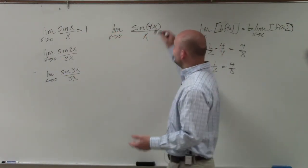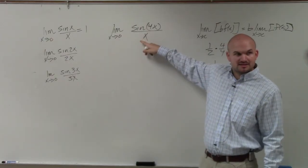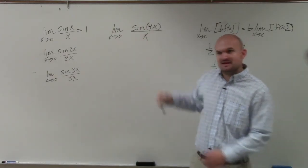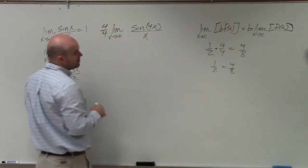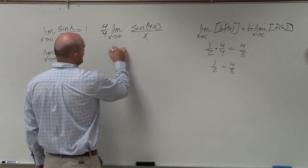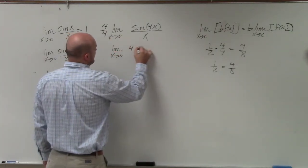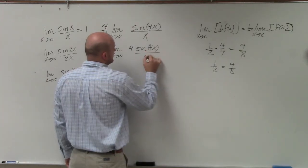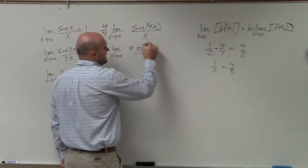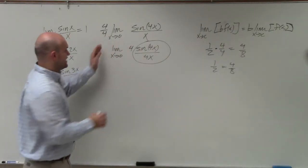So all I need is I need this to be 4x over 4x. So I need my 4 to be in my denominator. So if I multiply by 4 over 4, basically now what I have is the limit as x approaches 0 of 4 sine of 4x over 4x. I can now group this together and kind of take out that 4.